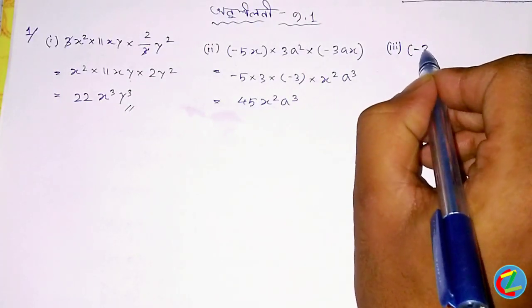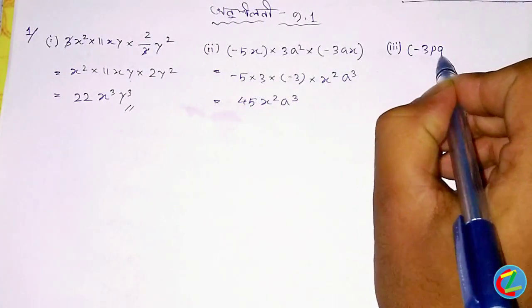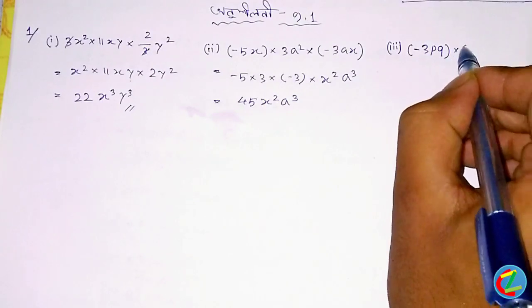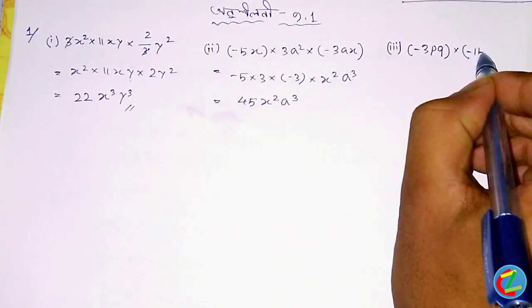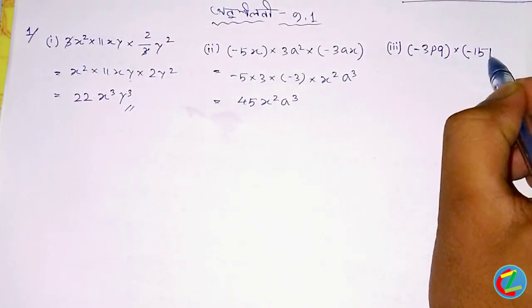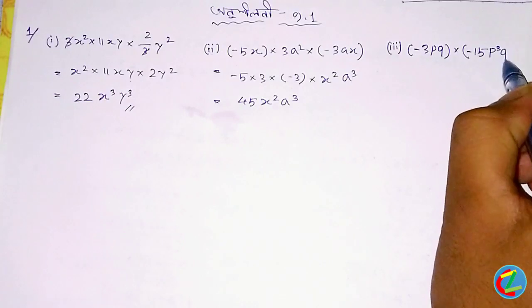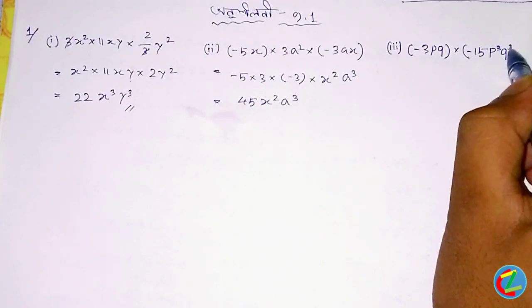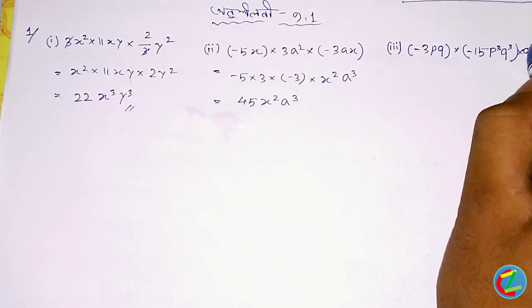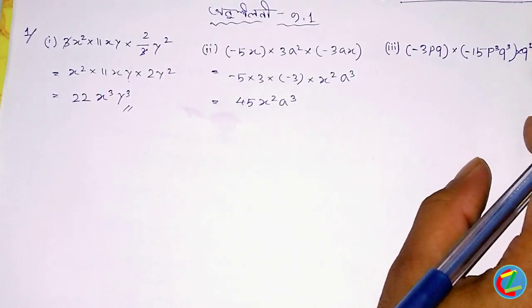Equal to the same here. This is minus times pq whole into minus 15pq, q into q square.